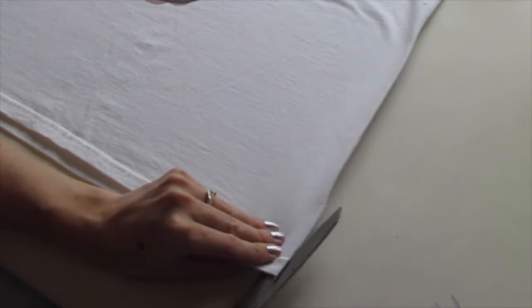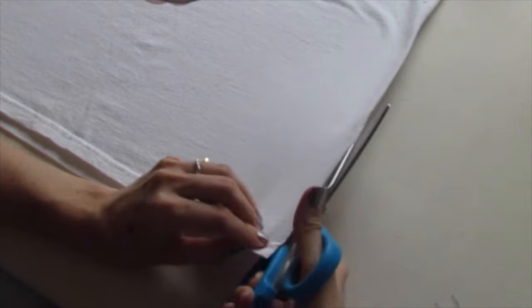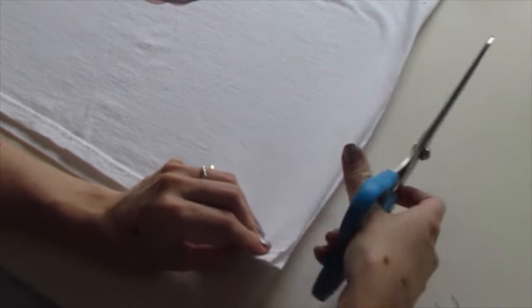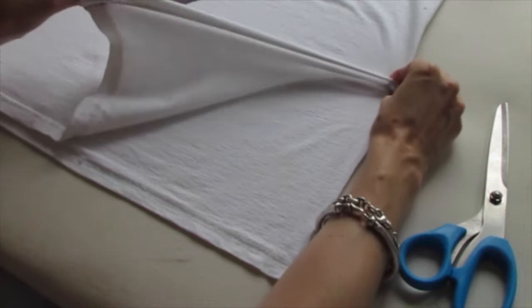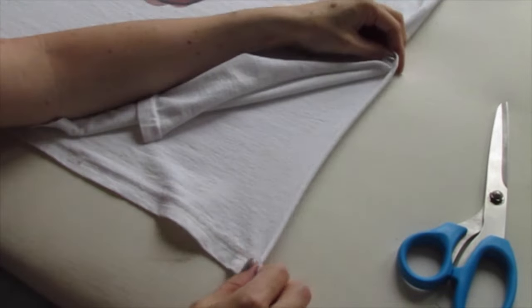Put your scissors into that fold and just start cutting up to the point you want to stop at. Just pull these sides so they curl a bit.